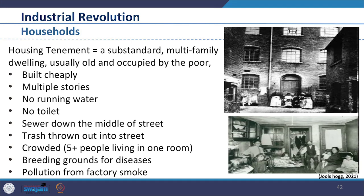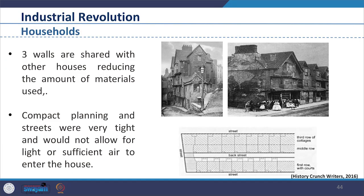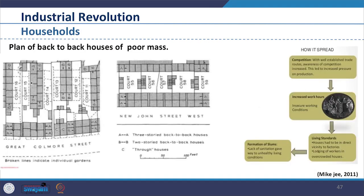Pollution from factory smoke was also present in the living atmosphere. Houses were built in courts — the major principle was that three walls were shared with other houses, reducing material usage. The units were very compact and cramped. Streets were very narrow and would not allow light or sufficient air to enter. In images of these houses, you can see how poor masses were placed back to back and how streets did not allow light to penetrate.